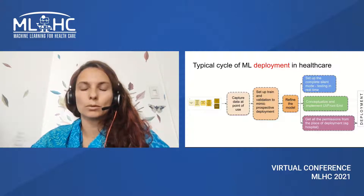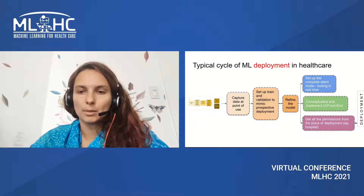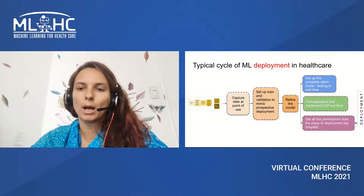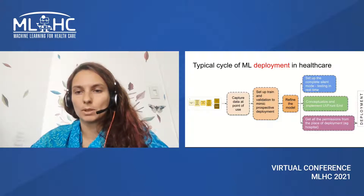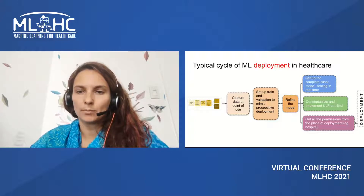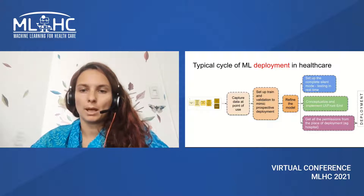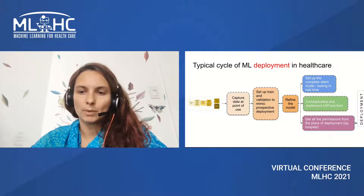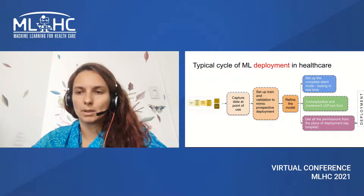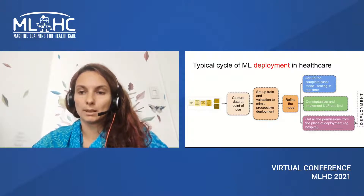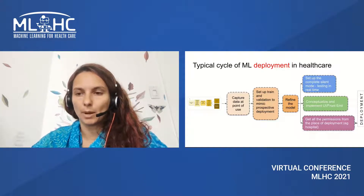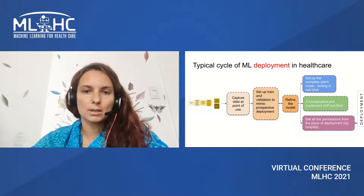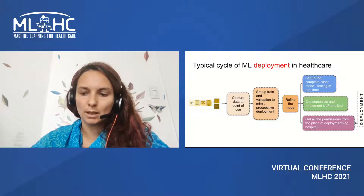There are variations on what silent mode looks like depending on the application. You have to conceptualize and implement a UI. If you're lucky, there is already a UI where you can just plug in your predictions. But in places where this is new, you have to worry about that too, and potentially work with HCI specialists. And of course, all permissions and all teams have to be aligned with deployment — privacy teams, IT teams — and that takes time because normally this is not their first priority. So deployment is at the end of that, and there are many lessons to be learned along the path.